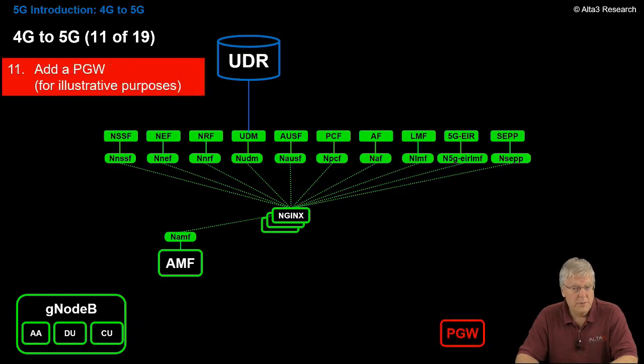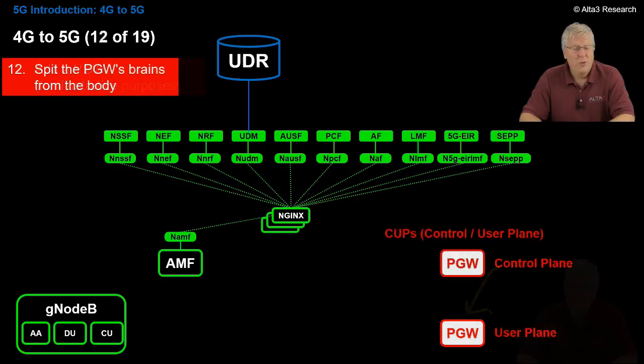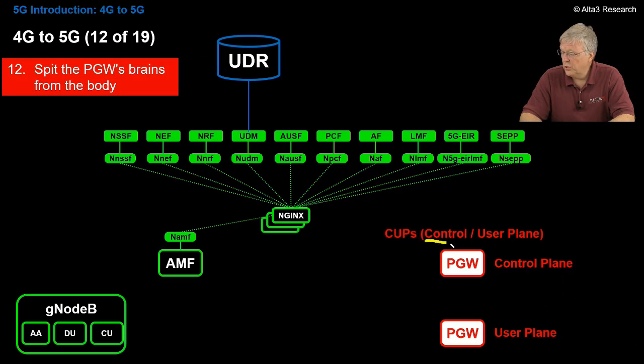For illustrative purposes, I'm going to show that we're adding a PGW. But it's not going to last very long. We split the PGW into control plane, user plane separation, or CUPS. So this top PGW is really the brains of the PGW. We call it the control plane. The bottom PGW, we call the user plane.